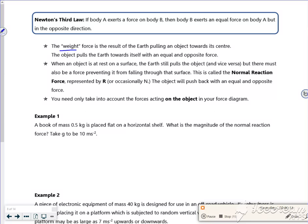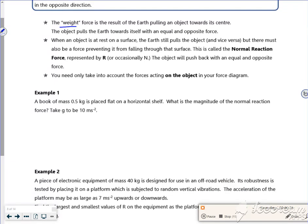The weight is a force as a result of the Earth pulling an object towards its centre. The object pulls the Earth towards itself as an equal and opposite force. When an object is at rest on the surface, the Earth still pulls the object and vice versa, so there must be a normal reaction.